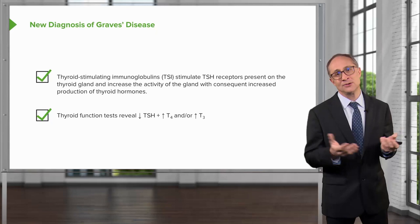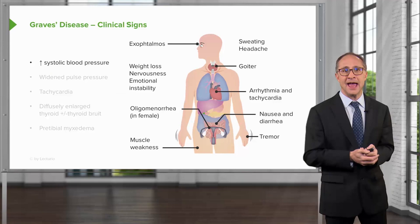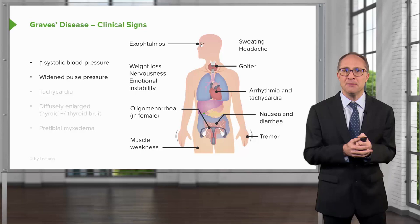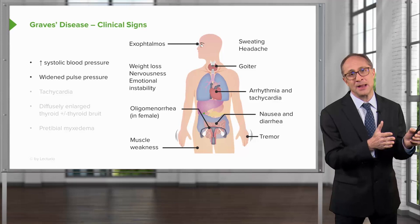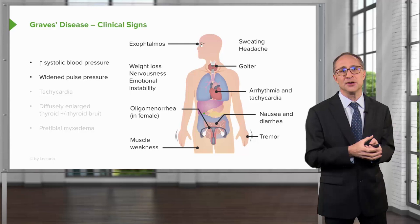Let's go through some of the clinical signs of Graves' disease. Patients may have an elevated blood pressure on physical exam. They may also have a widening of their pulse pressure. A widening of the pulse pressure manifests when the systolic blood pressure is much higher than the diastolic blood pressure. This is the hallmark of thyroid hormone effect on the heart, where increased cardiac output and increased pumping of the myocardium occurs, thus widening the pulse pressure.